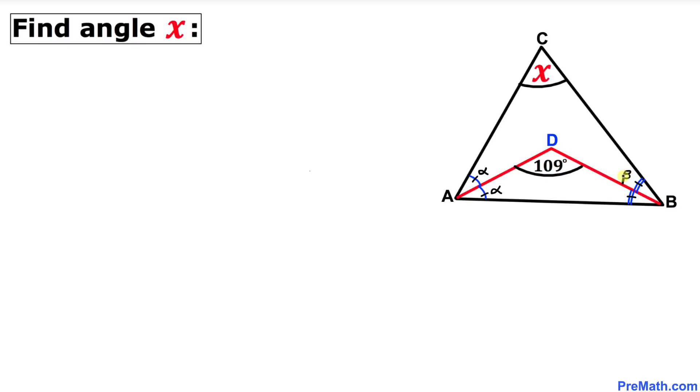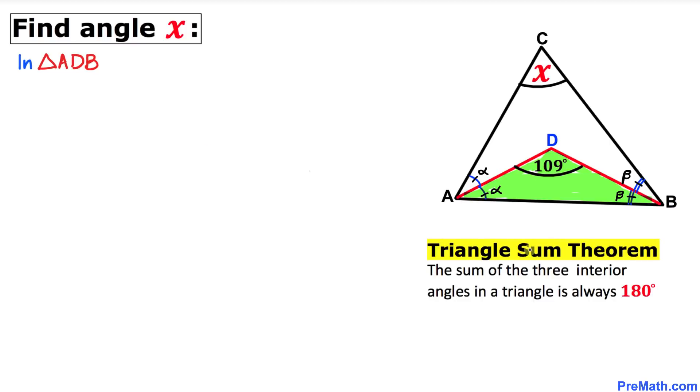If I call this angle beta, this angle is also beta. Now let's focus on triangle ADB and recall the Triangle Sum Theorem. The sum of three interior angles in any triangle is always 180 degrees. In our case, this angle plus this angle plus this angle must equal 180 degrees. Let me write down: alpha plus beta plus 109 degrees equals 180 degrees.